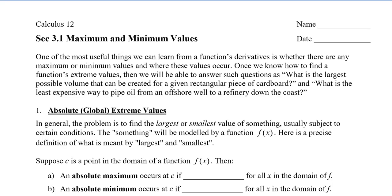In this video, we're going to take a look at maximum and minimum values, and also the extreme value theorem. One of the most useful things that we can learn from a function's derivative is whether there are any maximum or minimum values and where these values occur. Once we know how to find these values, which are often called extreme values, then we will be able to answer questions such as: what is the largest possible volume that can be created for a given rectangular piece of cardboard, or what is the least expensive way to pipe oil from an offshore well to a refinery down the coast.